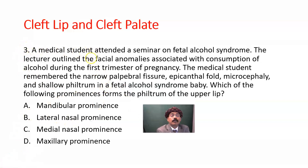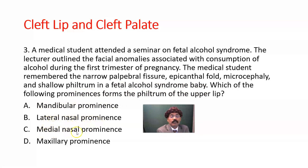Question three: A medical student attended a seminar on fetal alcohol syndrome. The lecturer outlined facial anomalies associated with consumption of alcohol during the first trimester of pregnancy, including microcephaly and shallow philtrum. Which of the following prominences forms the philtrum of the upper lip? A) Mandibular prominence, B) Lateral nasal prominence, C) Medial nasal prominence, D) Maxillary prominence. The answer is C, medial nasal prominence.